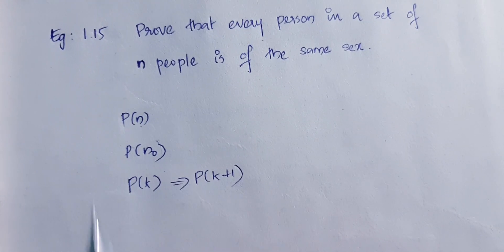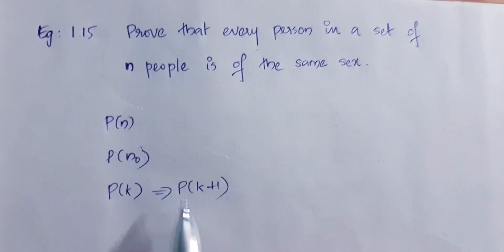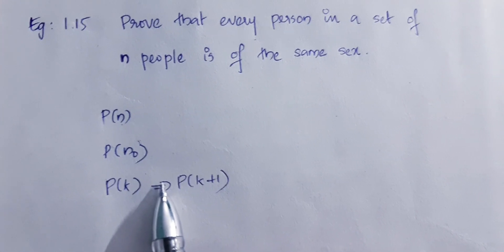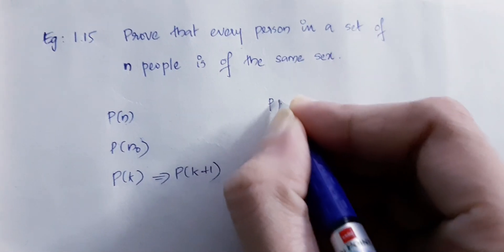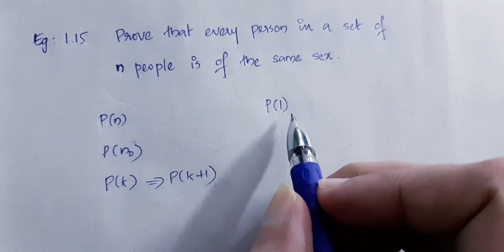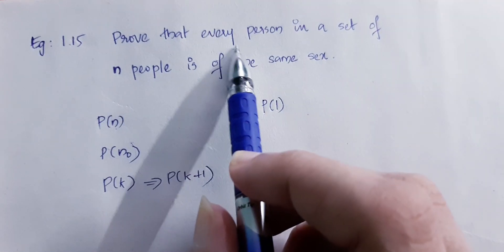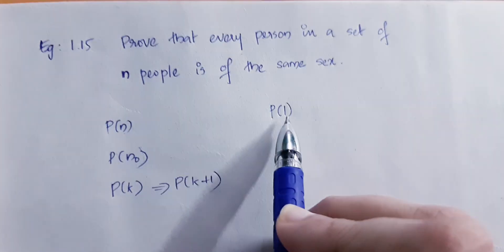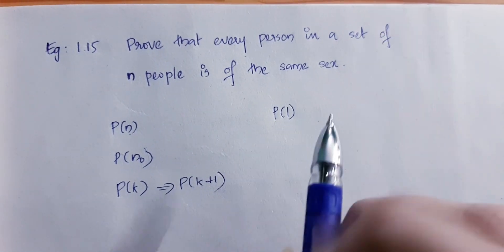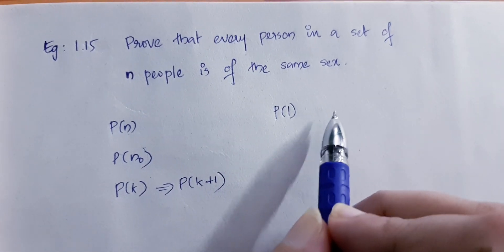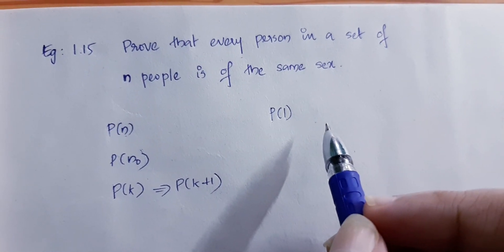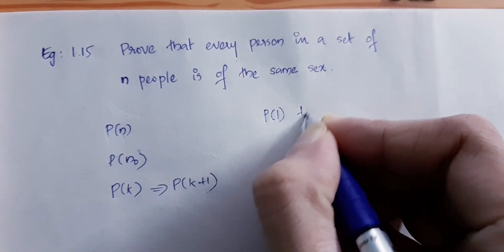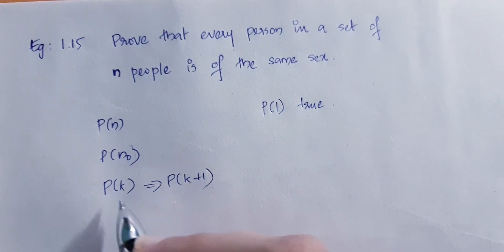We will prove it. If we prove P of n — that every person in a set of n people is of the same sex — then if one person is of the same sex and the other person is of the same sex, we can compare them. If the same P of n holds, this is the right approach.